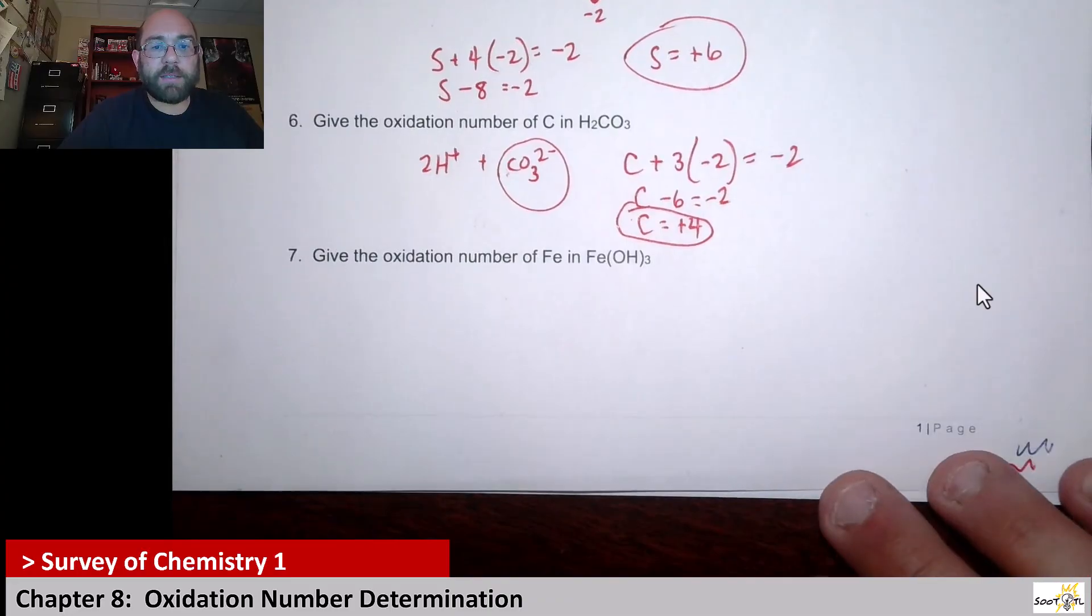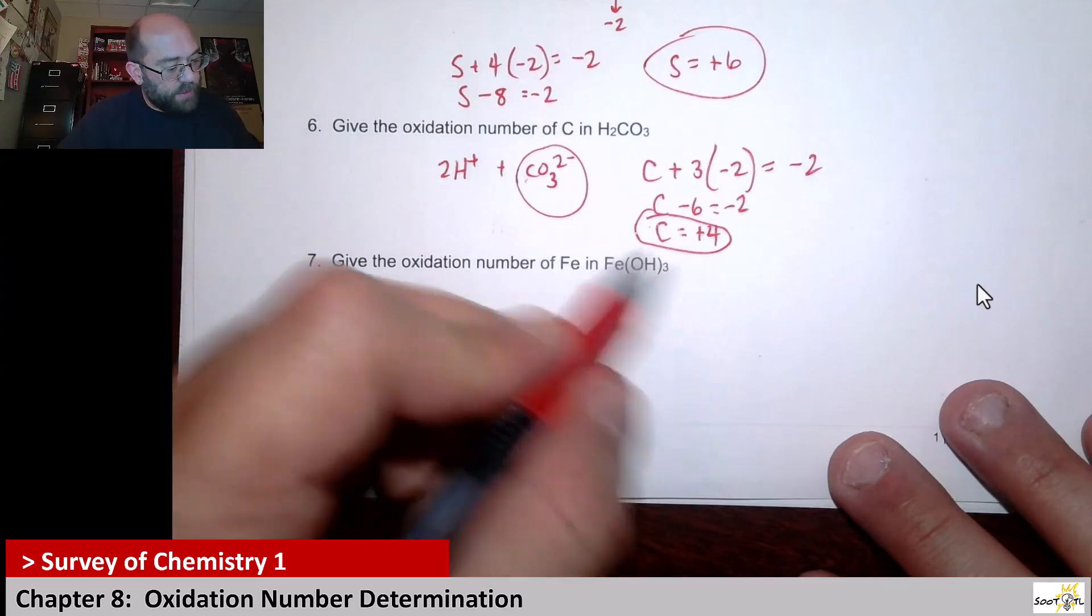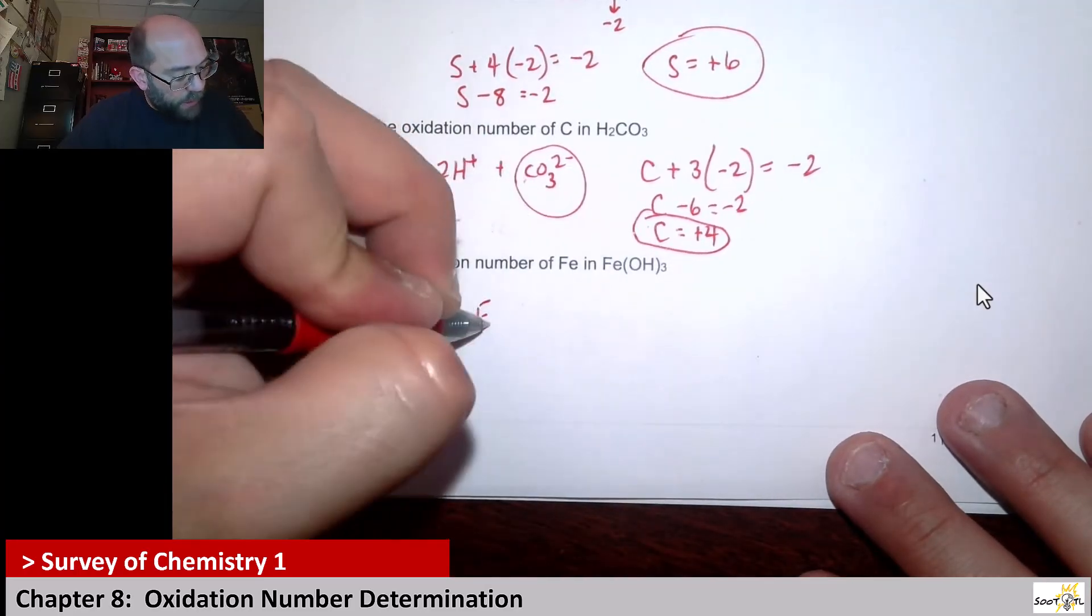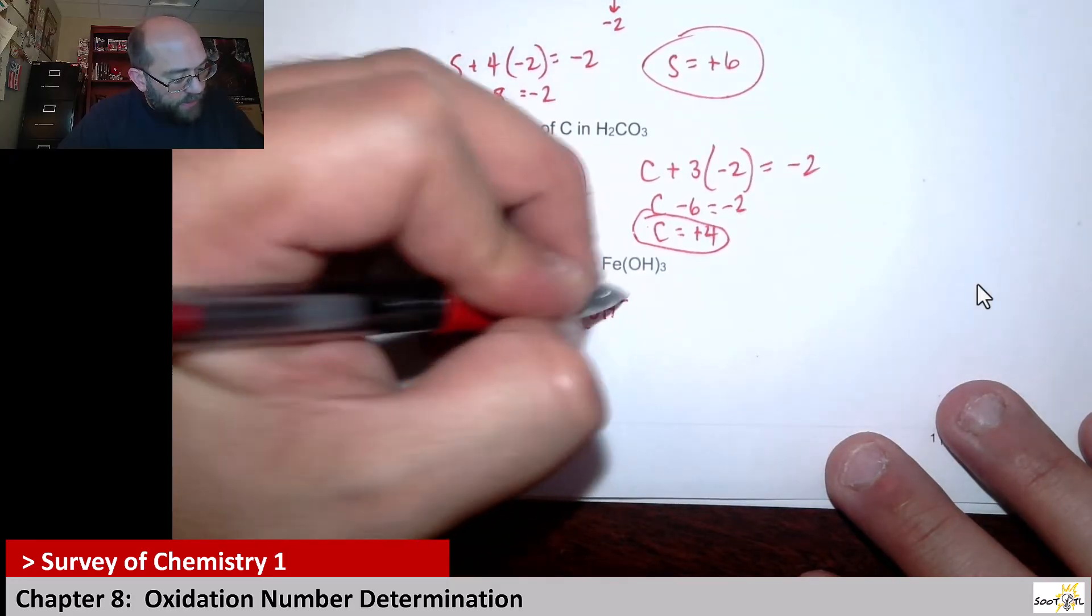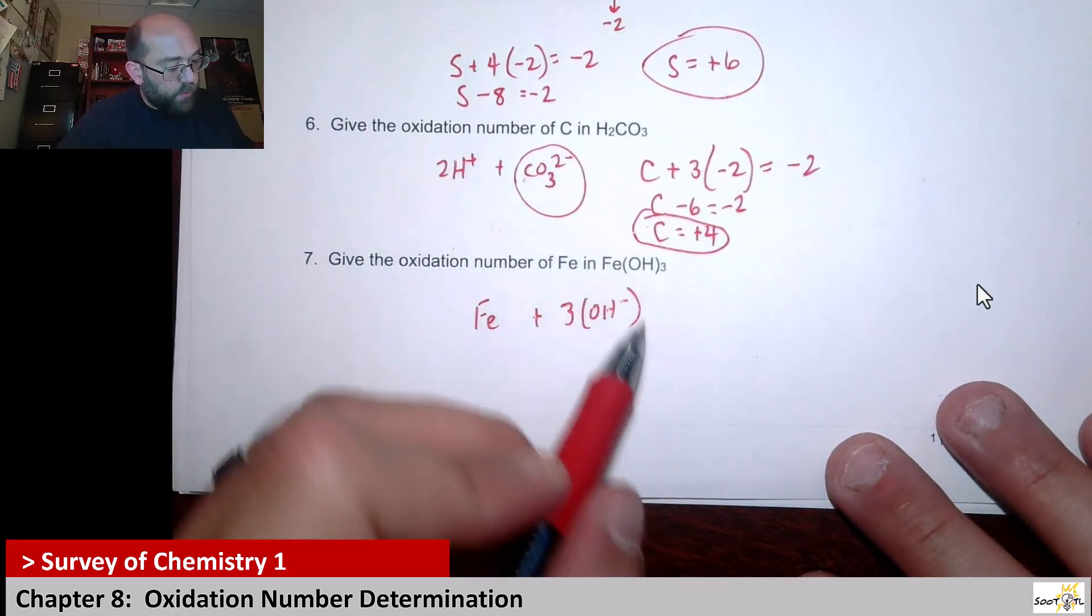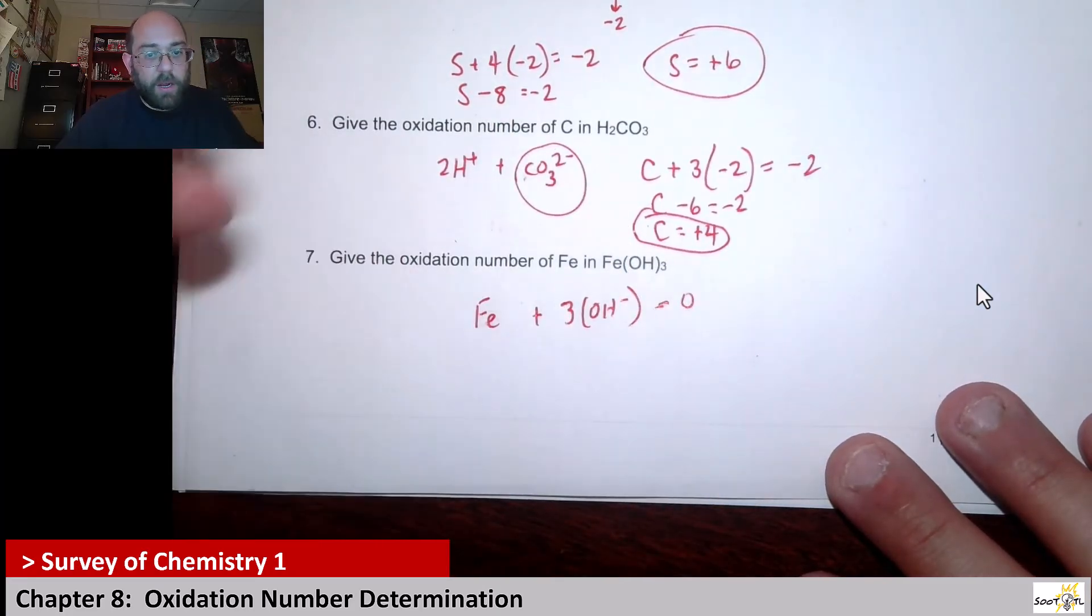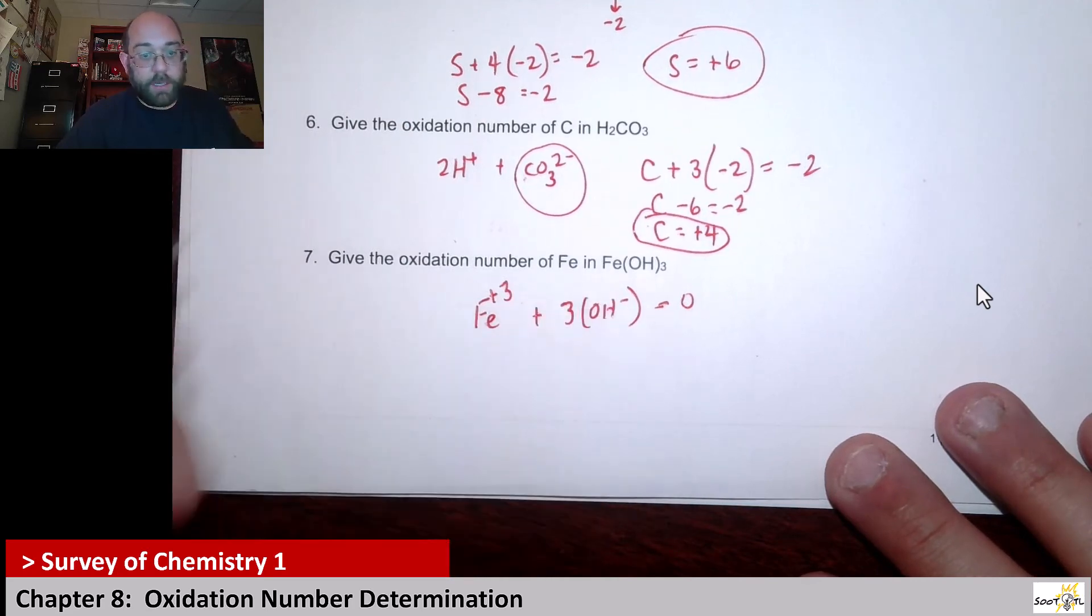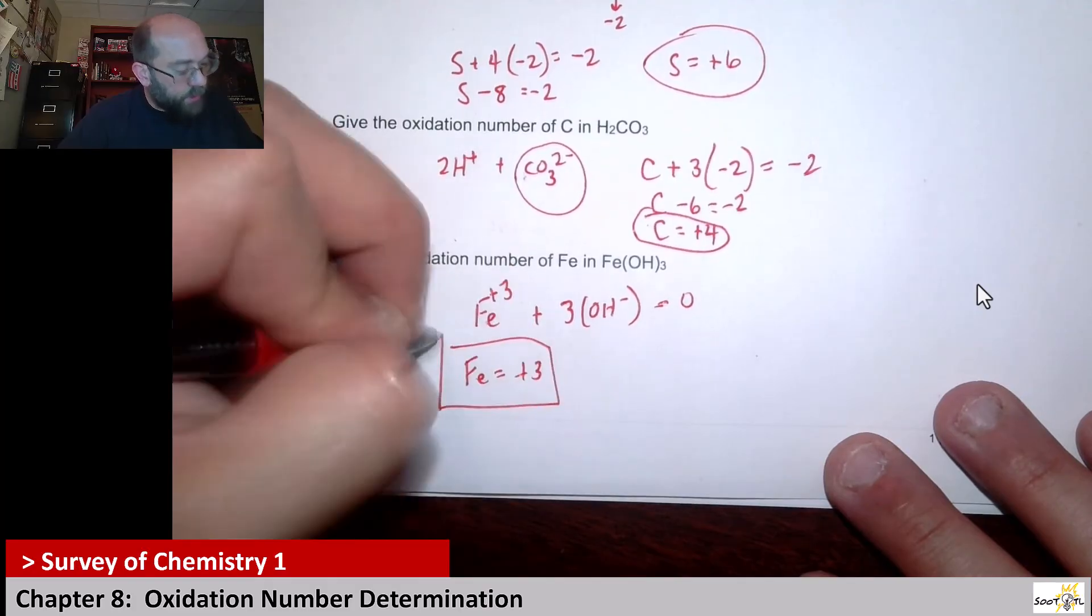All right, the oxidation number for iron in iron hydroxide. So this is yet again another ionic compound, and that's a transition metal. We have iron plus three of these OH minuses. In order for that whole charge to equal zero, we know that iron here has to be a +3. Plus three and then a total of -3 equals zero. So iron has an oxidation number of plus three.